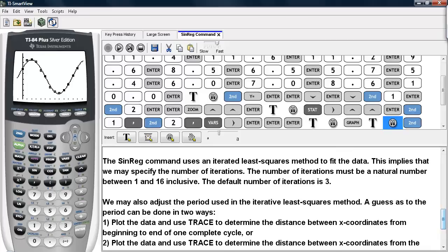Now the sinreg command uses an iterated least squares method to fit the data. And this implies that we may specify the number of iterations. The number of iterations must be a natural number between 1 and 16 inclusive. And the default number is 3.